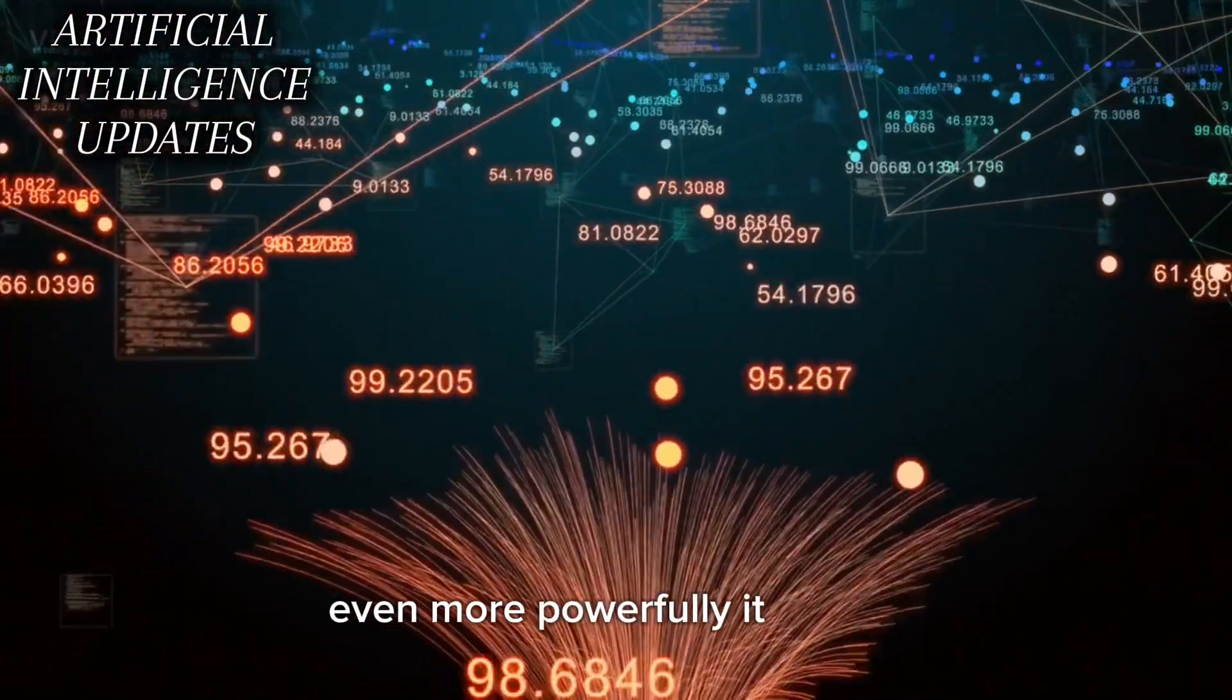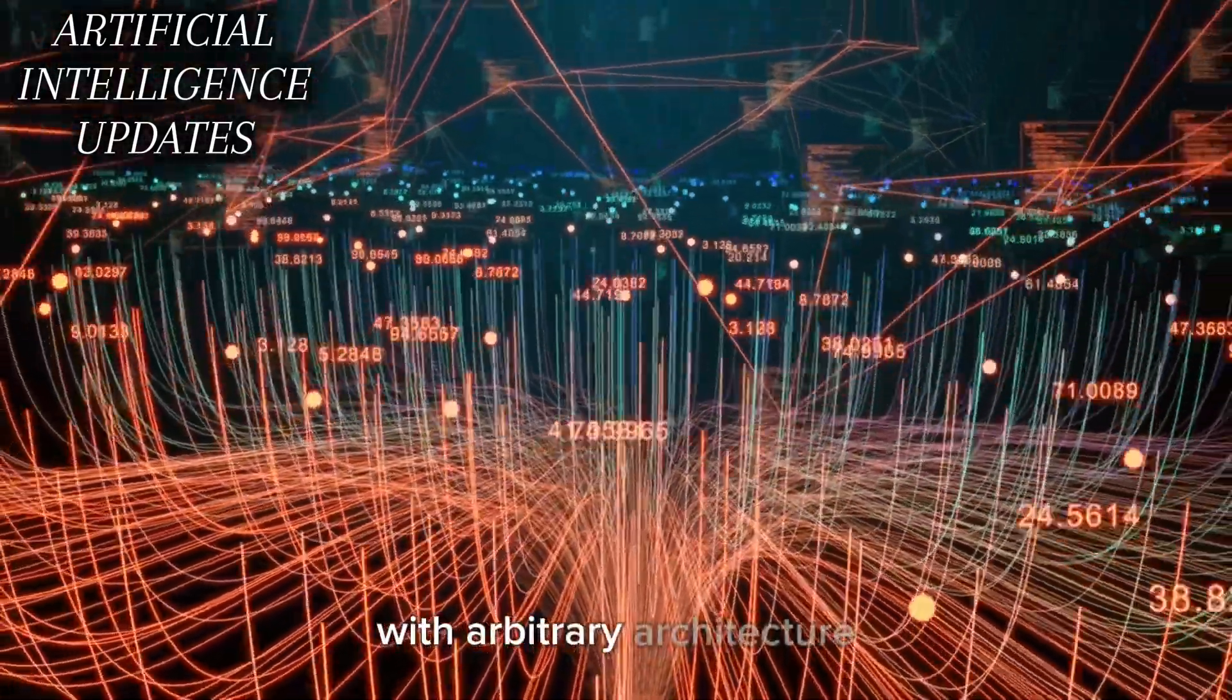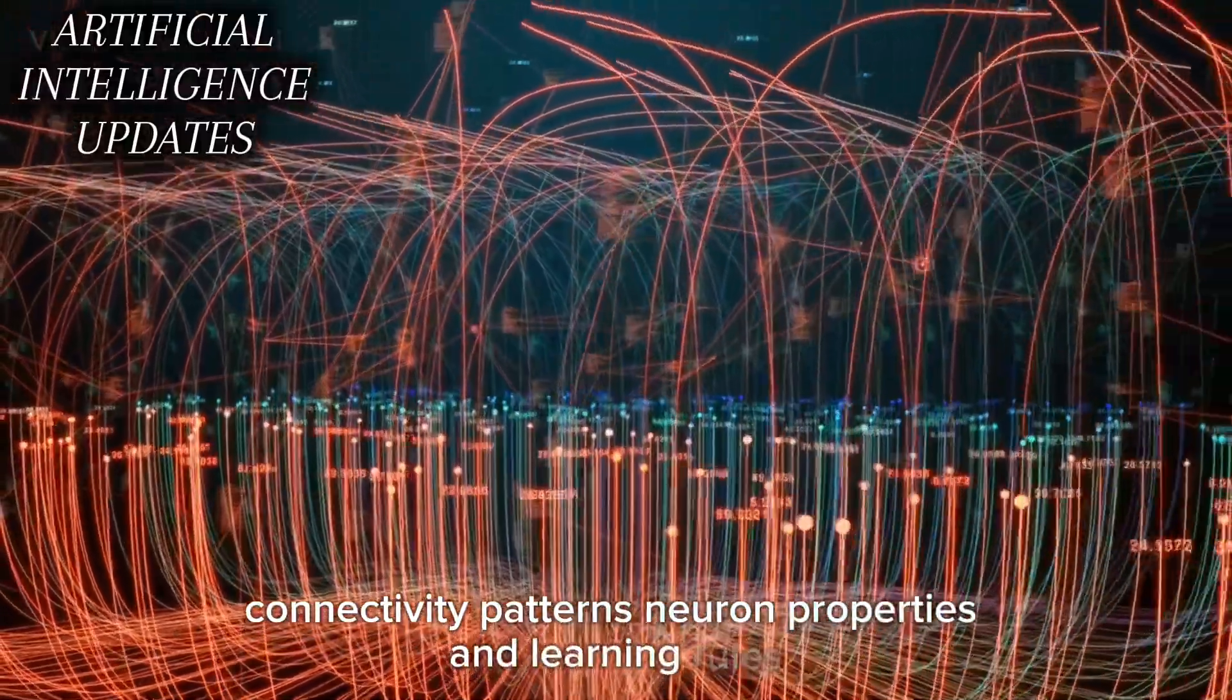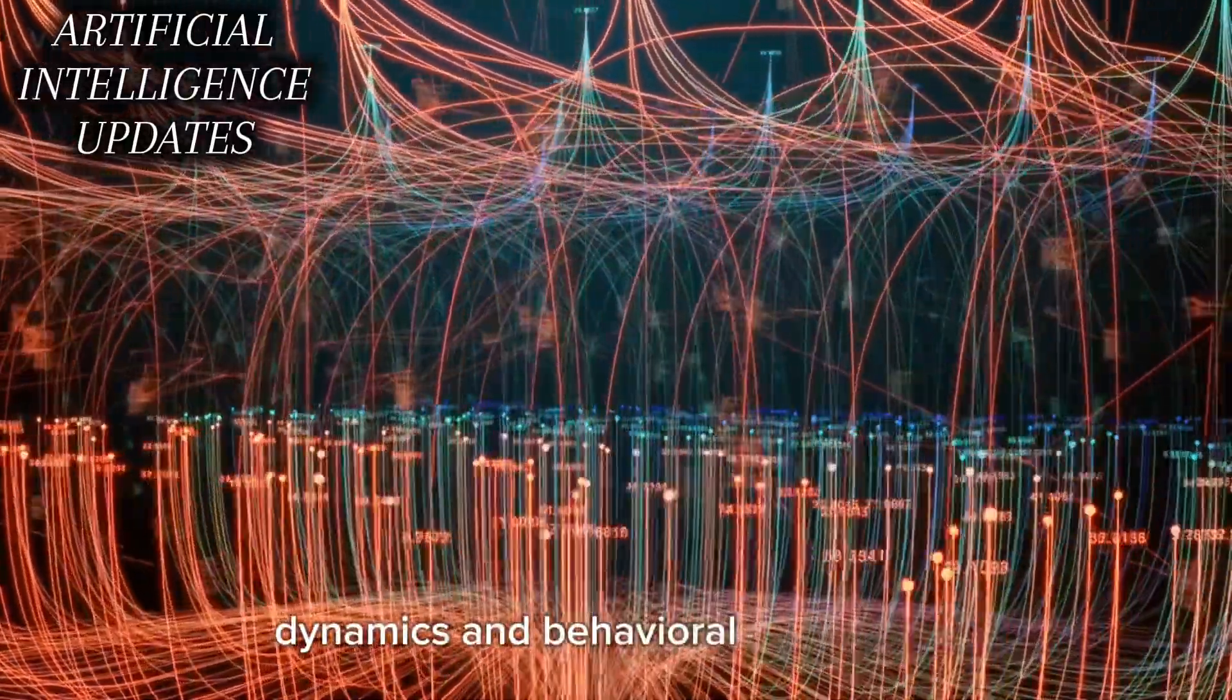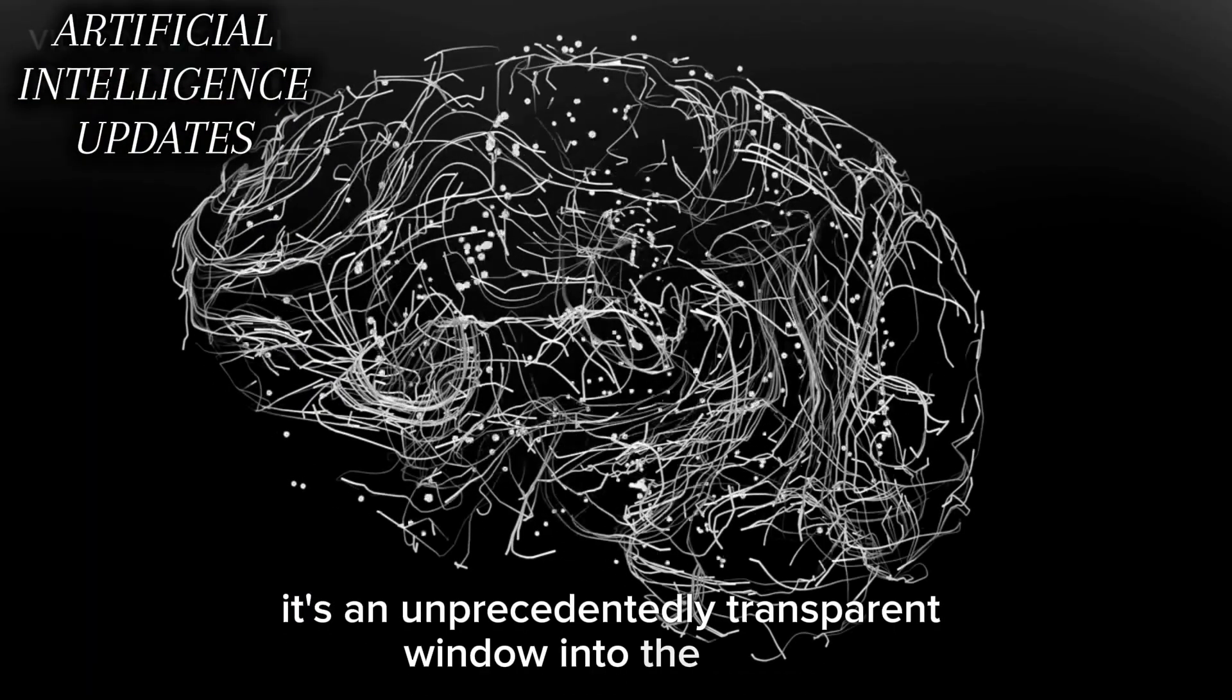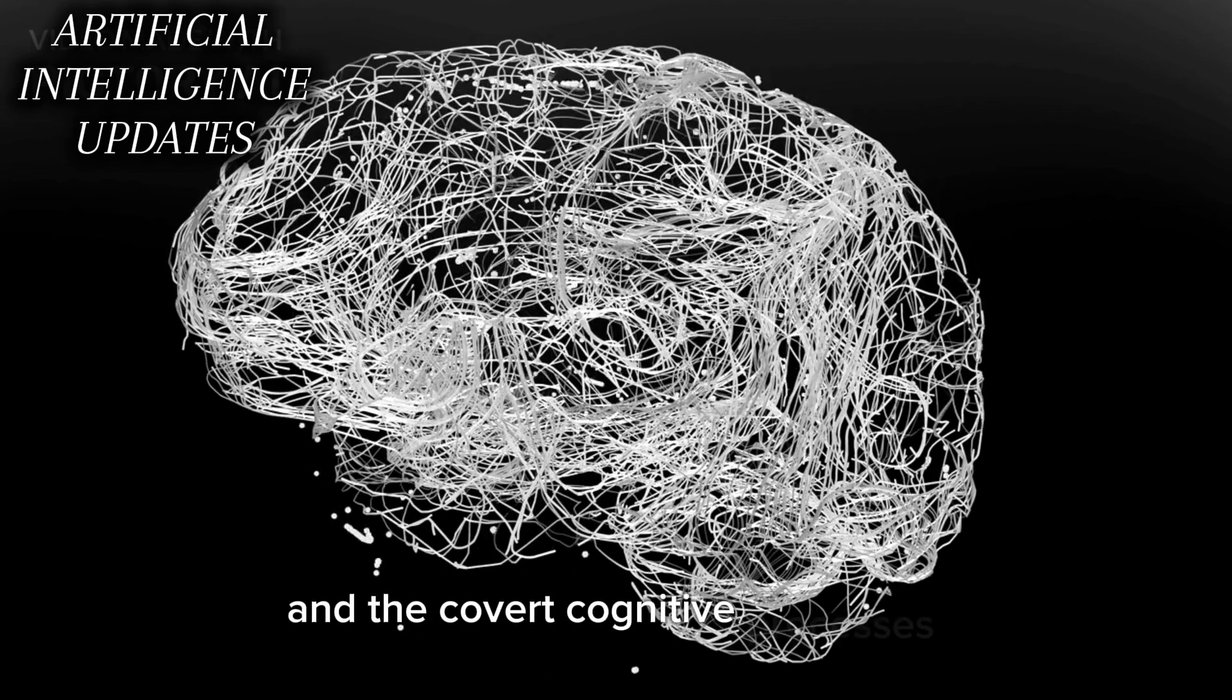Even more powerfully, it allows constructing simulated neural networks with arbitrary architecture, connectivity patterns, neuron properties, and learning rules, then seeing how they give rise to emergent dynamics and behavioral capabilities. It's an unprecedentedly transparent window into the neural mechanisms behind both overt actions and the covert cognitive processes supporting them.